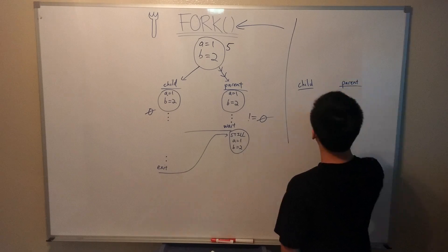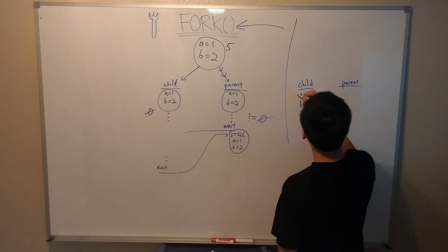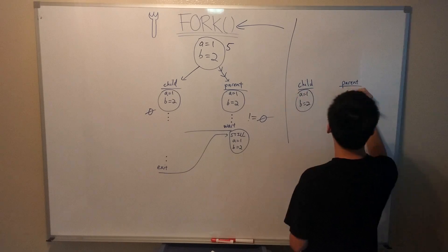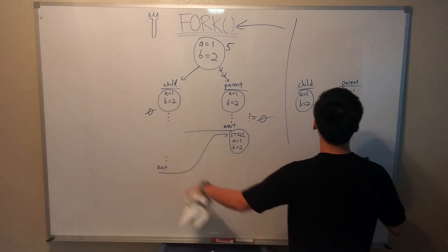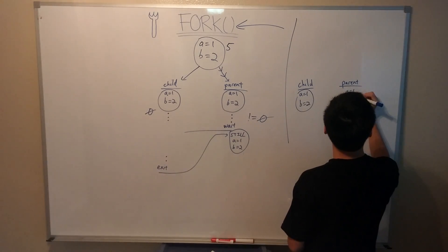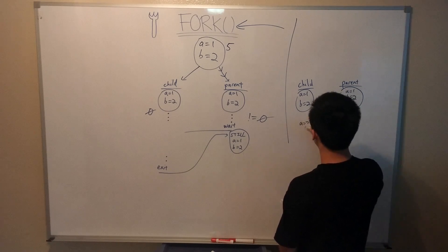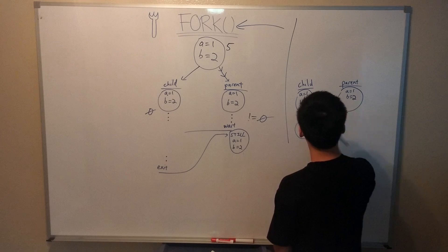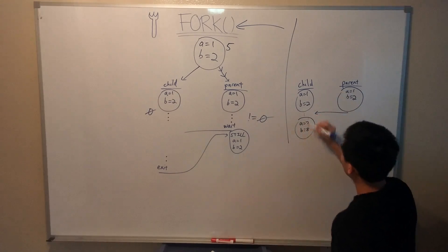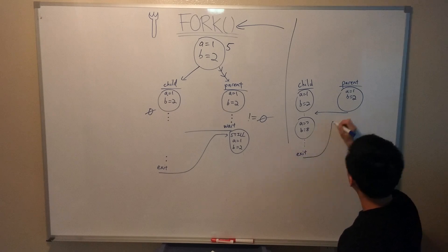Remember when I said zombies a few minutes ago? What happens is that the wait system call actually frees up the resources that the child is using once the child state changes, i.e., when the child terminates. Without the wait call, although the child will still terminate, nothing will free up its resources, which may lead to memory issues. A child process that has terminated but still takes up resources as a result of not being waited on is referred to as a zombie process.